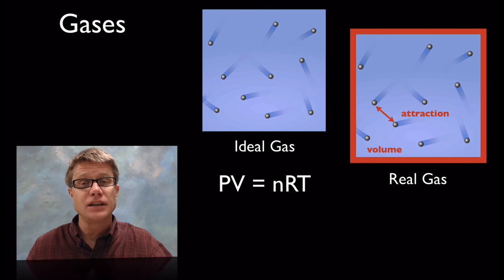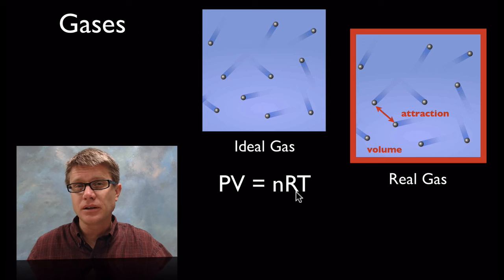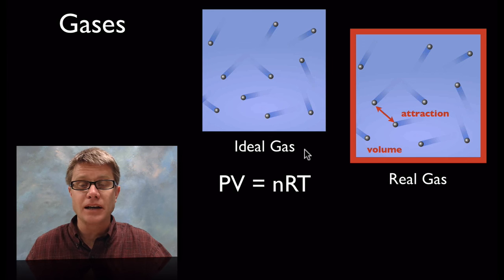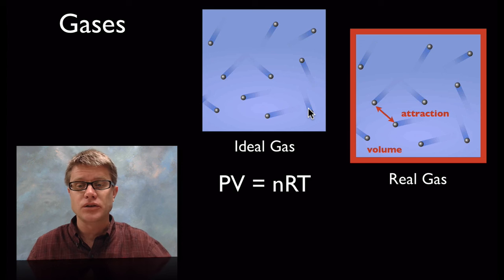When we get to gases, we have ideal gases which can be explained using the ideal gas law where PV equals NRT, and then we have real gases. An ideal gas is an imaginary model that assumes there is no attraction between molecules and that there is an infinite amount of space for these molecules to move around.